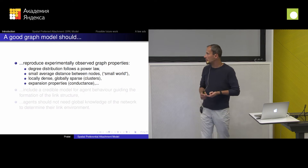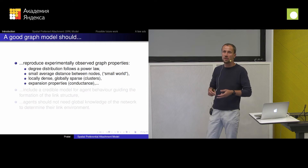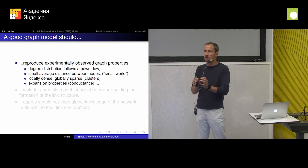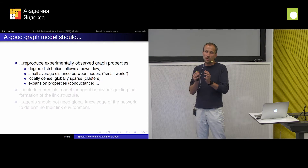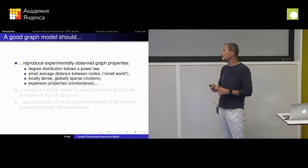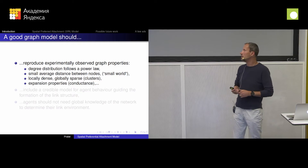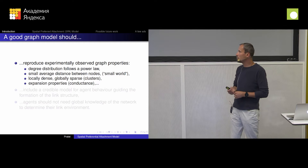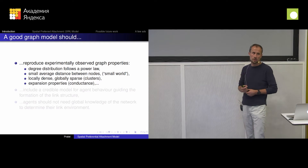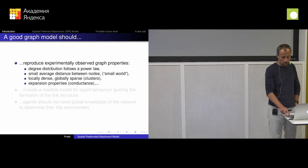We want to have some naturally occurring clusters — maybe there are some parts of the graph which are surprisingly denser compared to the global density. And we would like to have weak, bad expansion property and so on. All those things we want to mimic.